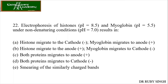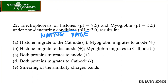Here is one of the very good questions. Electrophoresis of histones — which has a pI of 8.5 — and myoglobin, having a pI of 5.5, under non-denaturing conditions. So they are talking about native PAGE with conditions at pH 7. Histones are positively charged proteins, so they are going to be positively charged.